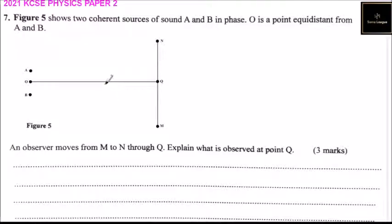Question number 7. Figure 5 shows two coherent sources of sound, A and B, in phase.